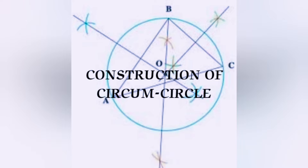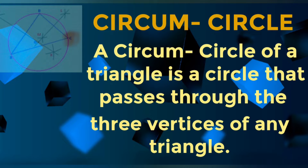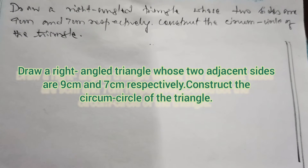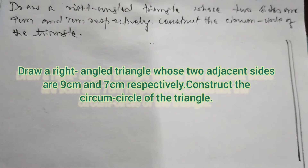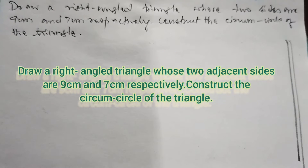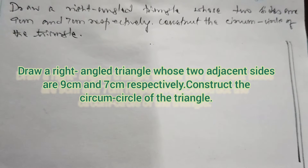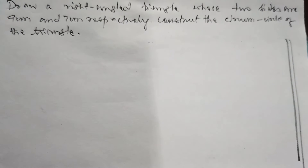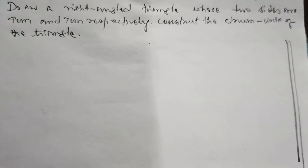For class 10 students, this video teaches the construction of a circumcircle. Draw a right-angled triangle whose two sides are 9 cm and 7 cm respectively, and you are supposed to construct the circumcircle of that triangle. First, you have to construct the right-angled triangle, and after that you have to draw the circumcircle of the triangle.